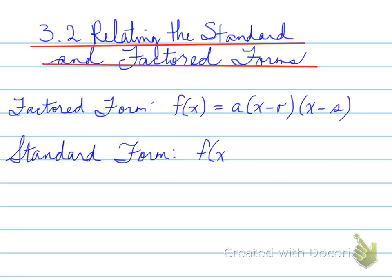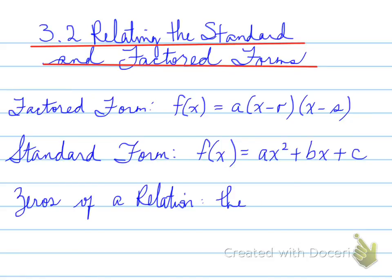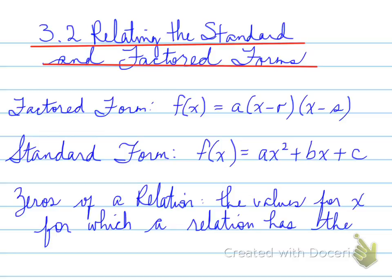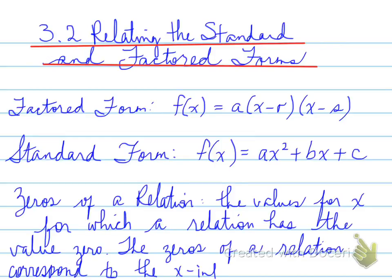Standard form is the expanded form of factored form. So it's the expanded version of factored form. And if you notice here, the a here is the same a that's going to be here. So the a value is always found at the front after the equal sign. Next, the zeros of a relation are the values for x for which a relation has the value 0, also known as the x-intercepts and the roots.